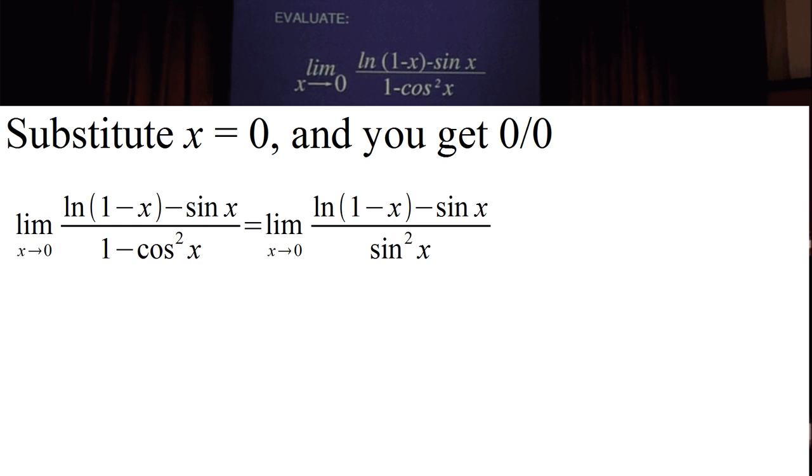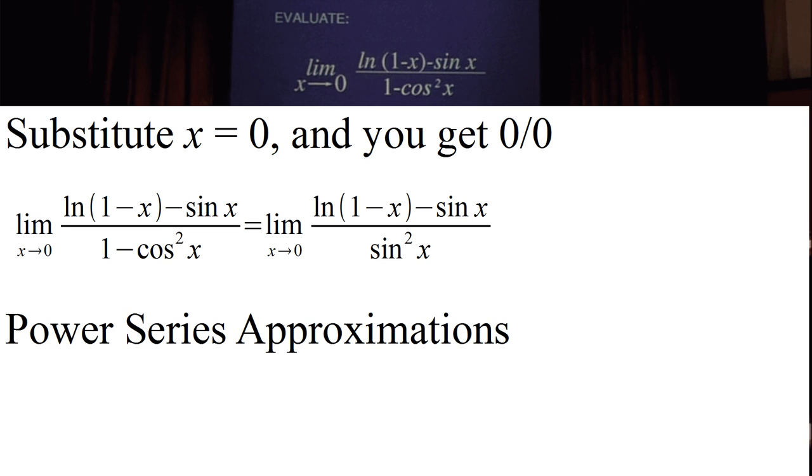So let's simplify the denominator, that one minus cosine squared of x is equal to sine squared of x. This is still an indeterminate form, we really can't divide through or simplify, but what we can do is we'll use a trick. We're going to look at the power series approximations of each term around zero.